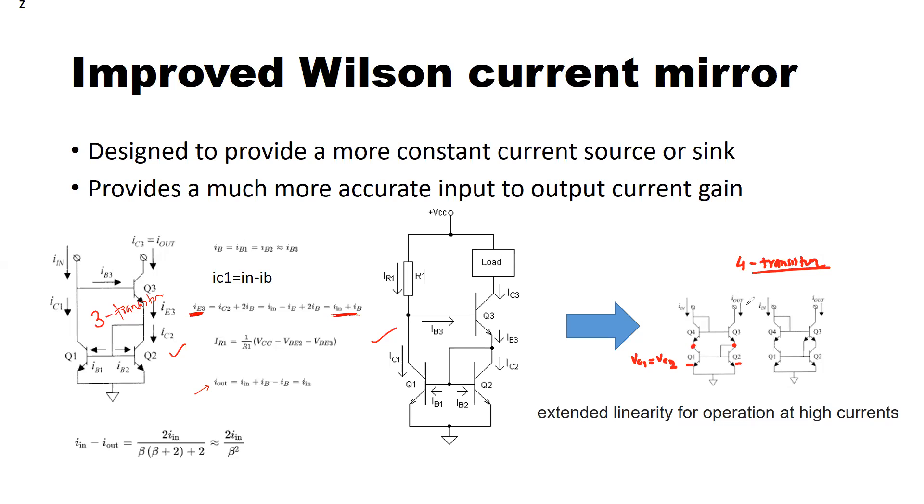And then this improved Wilson current mirror will remove the current error, the gain error of the current, to a negligible level. So this is the equation for the Wilson current mirror, and it will further improve this one. Then only the error that needs to be addressed is due to the finite beta of the transistors.